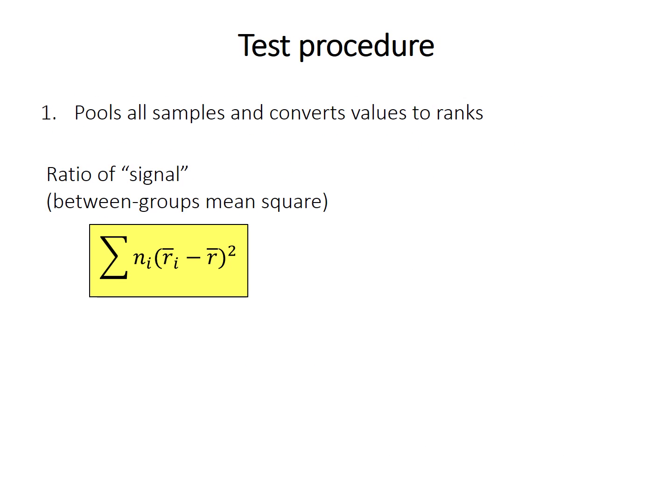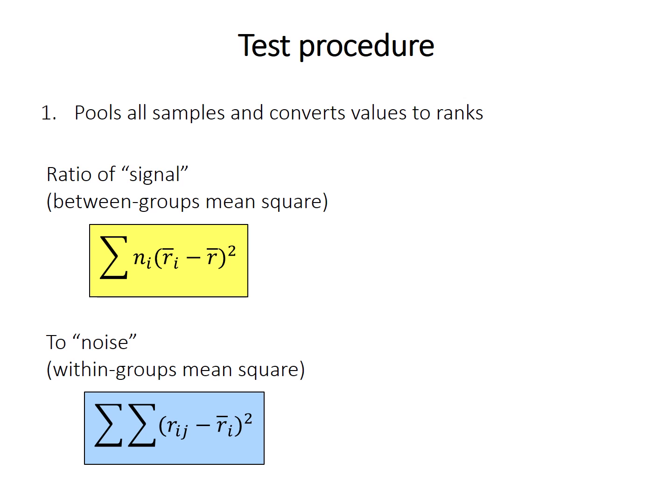Like the Mann-Whitney U test and other non-parametric methods, it pools the samples together and converts the values to ranks, and then just performs an ANOVA on the ranks. The signal is essentially the difference between each sample's mean rank and the overall mean rank, weighted for sample size. The noise is the spread of ranks within each sample. Ranks are just the order of the data: the smallest value is 1, the second smallest is 2, and so forth.